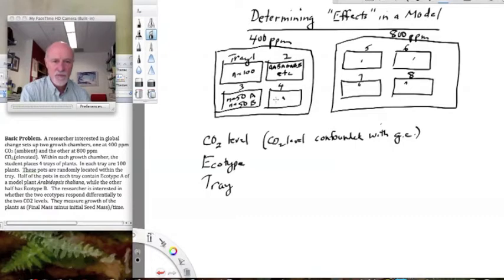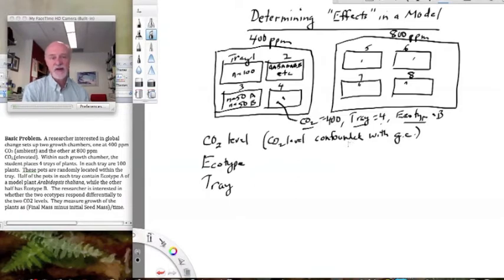And by the way, if we had an individual sitting here in a pot, we could tell what CO2 level that is. CO2 equals 400. We could tell what tray that's in. Tray equals 4. And we could tell what ecotype that is. Maybe it's ecotype equals B. And what we're really doing when we're doing our analysis of variance is we're trying to understand the relative impacts of these independent variables on whatever we're measuring on that individual. So we're doing that with all of our replication.